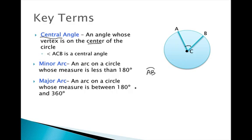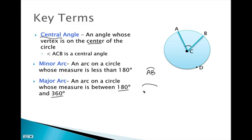If we put point D on the circle for reference, we can now name a major arc. A major arc is an arc on a circle whose measure is between 180 degrees and 360 degrees. This big arc here is definitely greater than 180 degrees. The way we write a major arc requires three letters — think of major being bigger, so it needs more letters. This would be arc ADB.